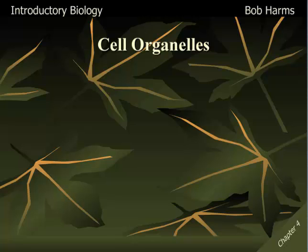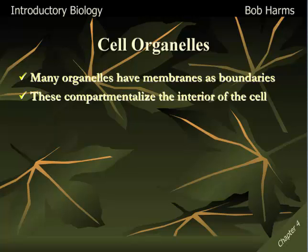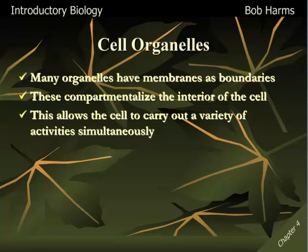Moving on from our membranes, the other major component inside of cells are the cell organelles. Cells have many, many different organelles, each playing a vital role in that cell's ability to metabolize and be alive. Most of these organelles have a membrane as a boundary, so we find lots of membrane on the inside as well. The general idea is that these membrane organelles act to compartmentalize or divide up the inside space of the cell, allowing different chemical reactions to occur simultaneously — so that two metabolic pathways that would normally interfere with each other can both occur uninterfered within their own organelles.